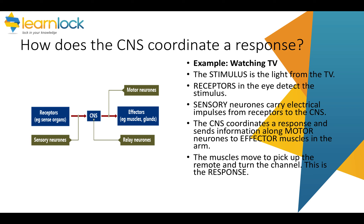The muscle or gland then causes a response. For example, you're watching TV and decide the program isn't something you want to watch. The message is sent to your brain, and then you pick up a remote control and change the channel. Now that is not a reflex — it's something that you're consciously thinking of doing, even though it can be quick.